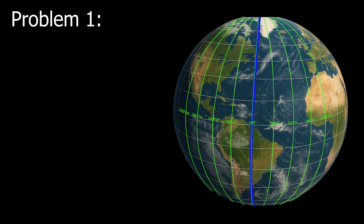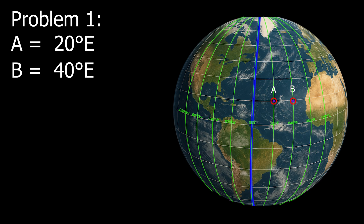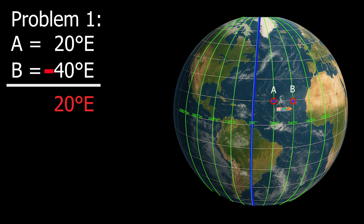Now let's answer the following examples. Example number one: Point A, 20 degrees east. Point B, 40 degrees east. The difference is 20 degrees. The vessel is moving east. Therefore, the D-long is 20 degrees east.